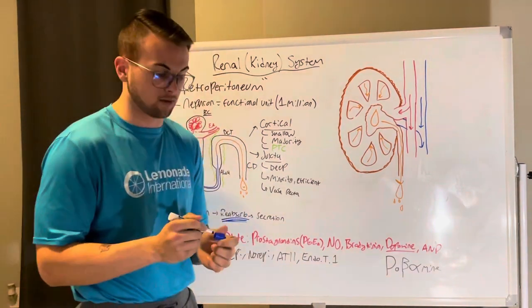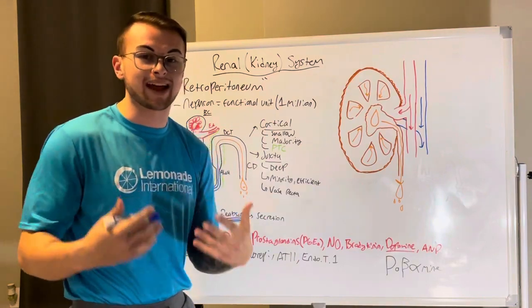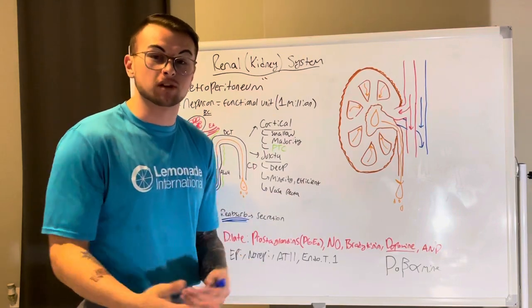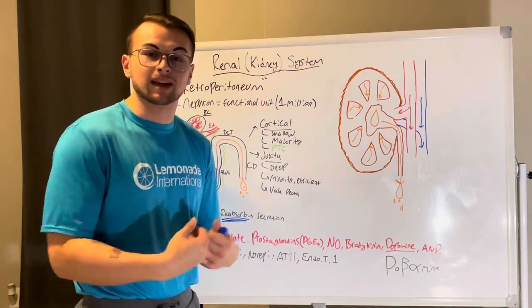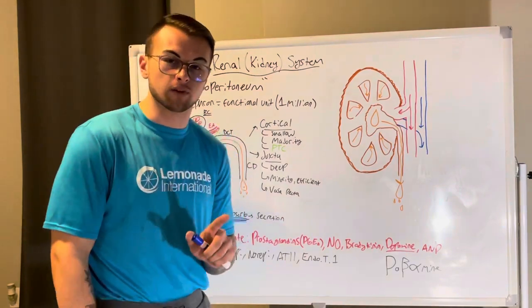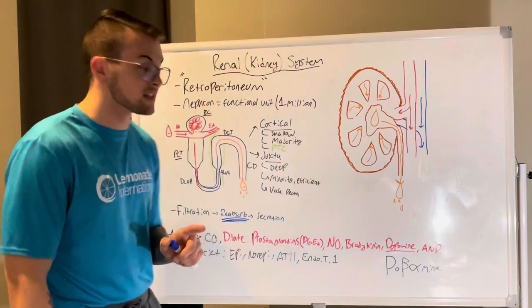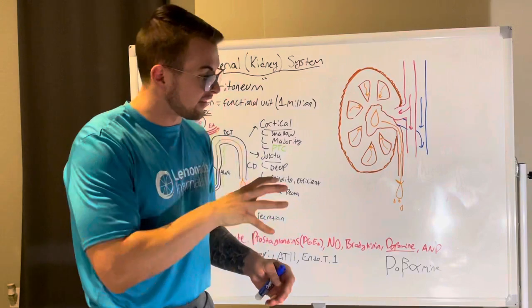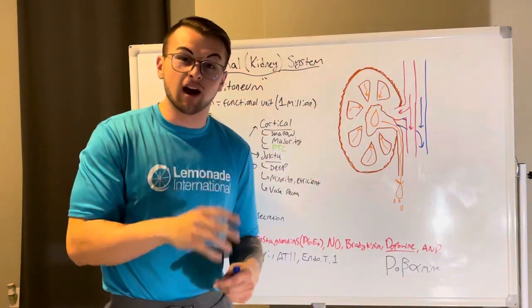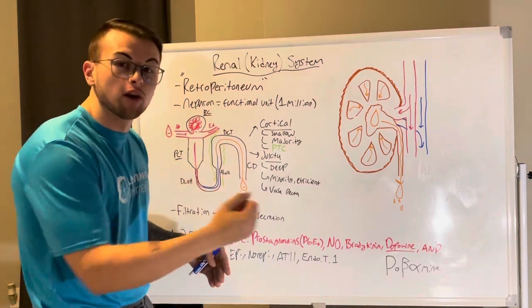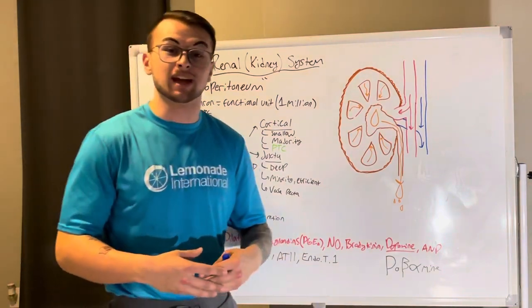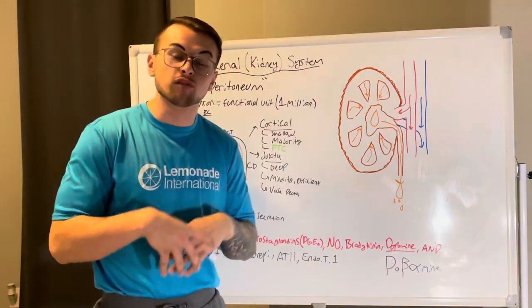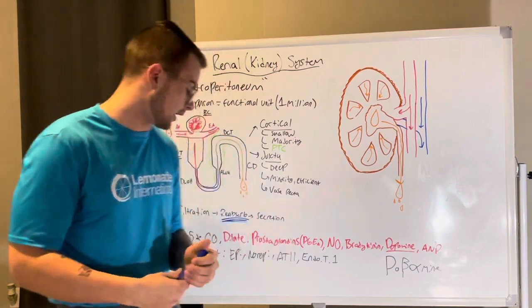Secretion versus excretion: excretion is actually leaving the body — urine, feces. Secretion is different: our workers take things from the body and put them onto the assembly line — into the tubules — so they can be processed and eliminated. Reabsorption takes things from the tubules back into the body; secretion puts things from the body into the tubules.